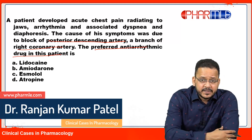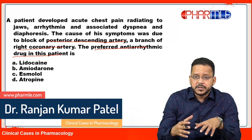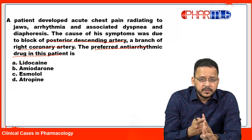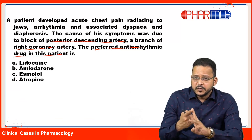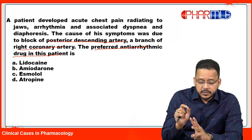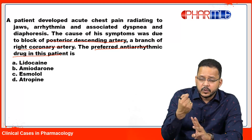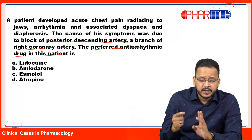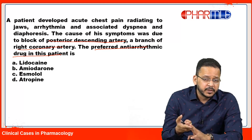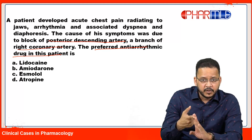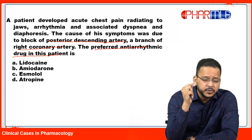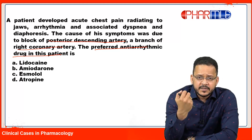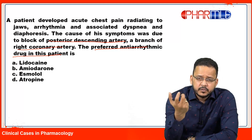The preferred anti-arrhythmic drug in this patient is — so guys, this clinical question is going to test three subjects. One: medicine — you have to make a diagnosis. Two: anatomy — you need to find out the location of the disorder, which is the posterior descending artery, a branch of the right coronary artery. Three: pharmacology — once you make the diagnosis, you go to treatment. Medicine, anatomy, pharmacology — three subjects are involved, and this is the integrated approach they will ask in your next exams.